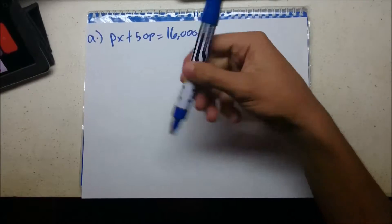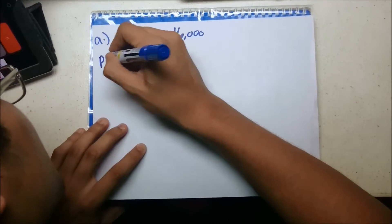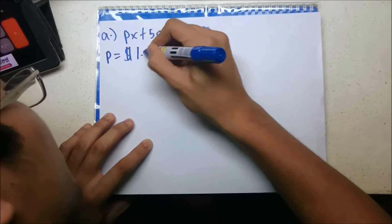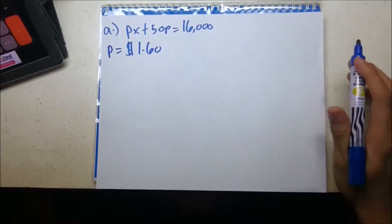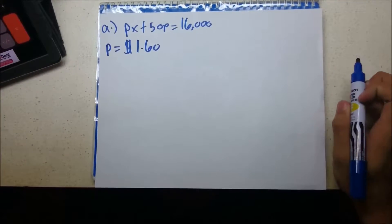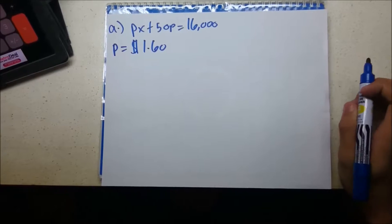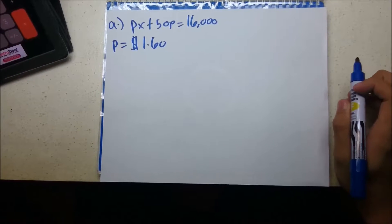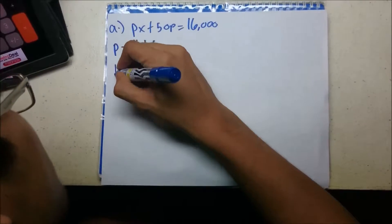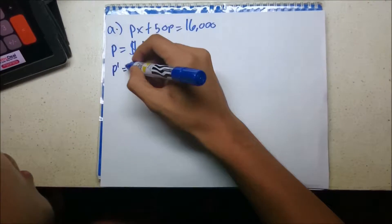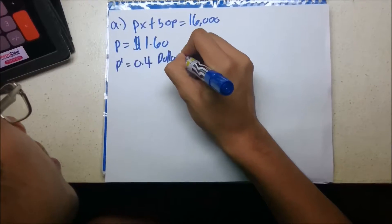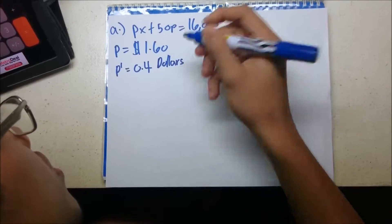The price per box is equal to $1.60, and the rate at which the price is increasing is P-prime, which is 0.4 dollars per week.